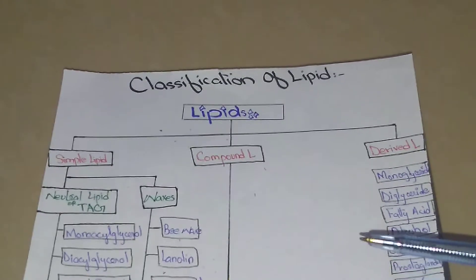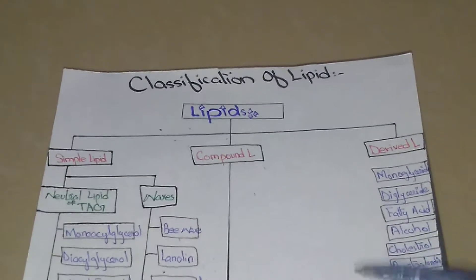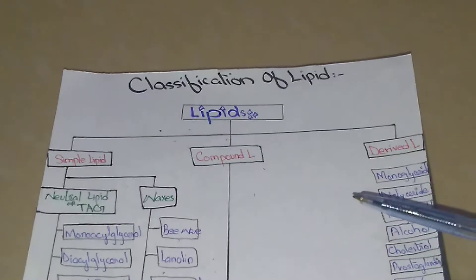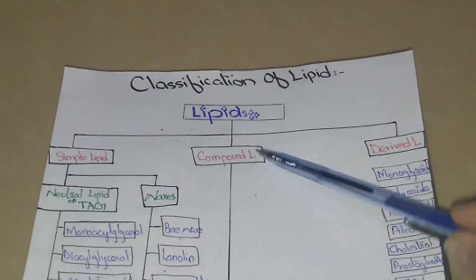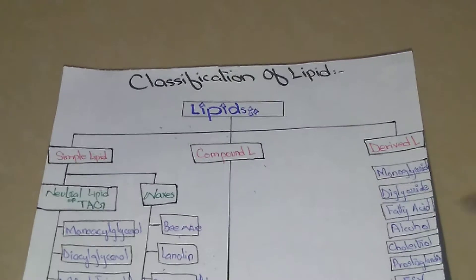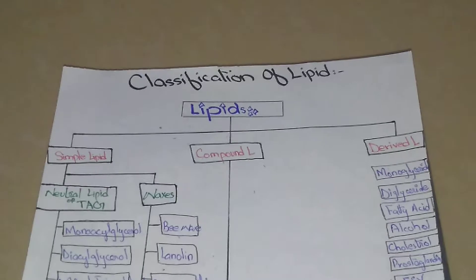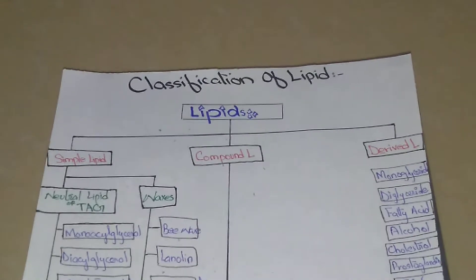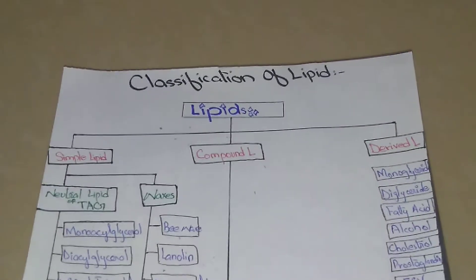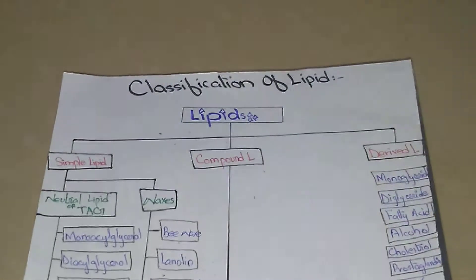Lipids are classified into three types: simple lipids, compound lipids, and derived lipids. Simple lipid is defined as an ester of fatty acid with alcohol. Compound lipid is defined as an ester of fatty acid with alcohol plus an additional substance — this additional substance may be in the form of phosphorus, sulfur, protein, etc. Derived lipids are lipids produced from the hydrolytic product of compound lipids.